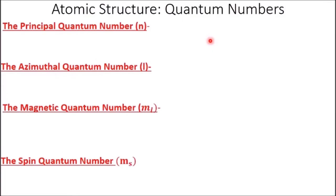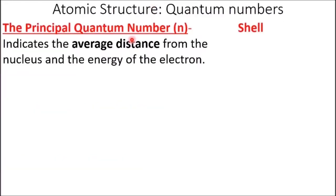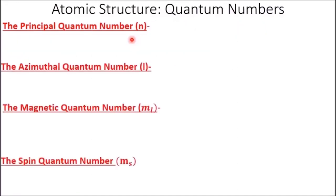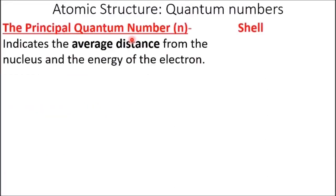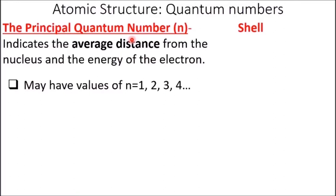Here are the four quantum numbers: the principal quantum number n, the azimuthal quantum number L, the magnetic quantum number ML, and the spin quantum number MS. The mnemonic is: shell, sub-shell, slot, spin. The principal quantum number n indicates the average distance from the nucleus and the energy of the electron — that's the shell quantum number — and it may have values of n equals 1, 2, 3, 4, up to infinity. The azimuthal quantum number L describes the shape of the region of space occupied by the electron — it's the sub-shell — and L can have values of 0, 1, 2, 3, all the way up to n minus 1.